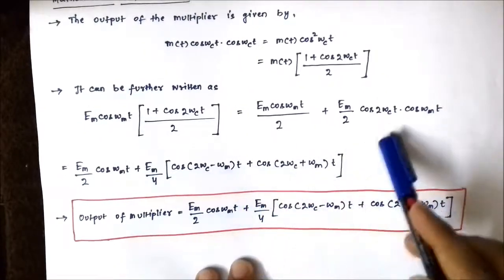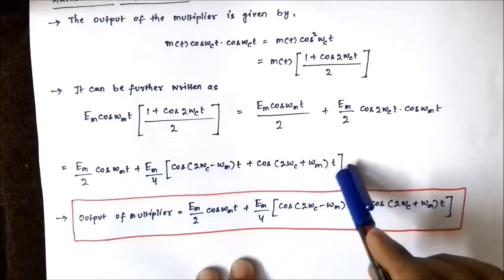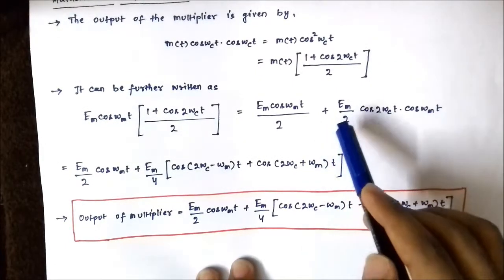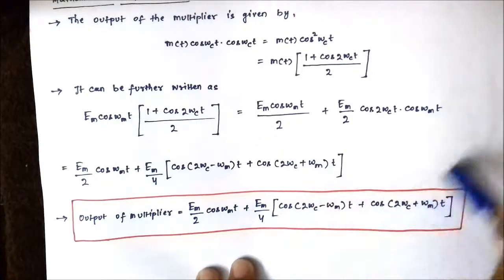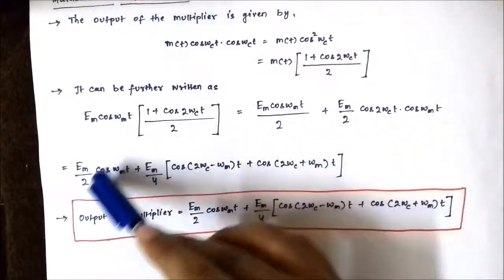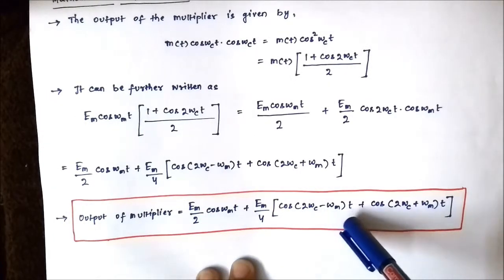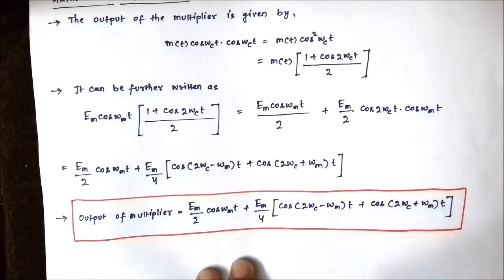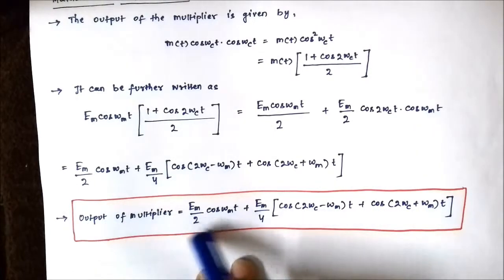We further simplify using the identity 2·cos(A)·cos(B) = cos(A−B) + cos(A+B). This gives the second term as (Em/4)·[cos(2ωc − ωm)t + cos(2ωc + ωm)t]. So the total output of the multiplier is: (Em/2)·cos(ωmt) + (Em/4)·[cos(2ωc − ωm)t + cos(2ωc + ωm)t].